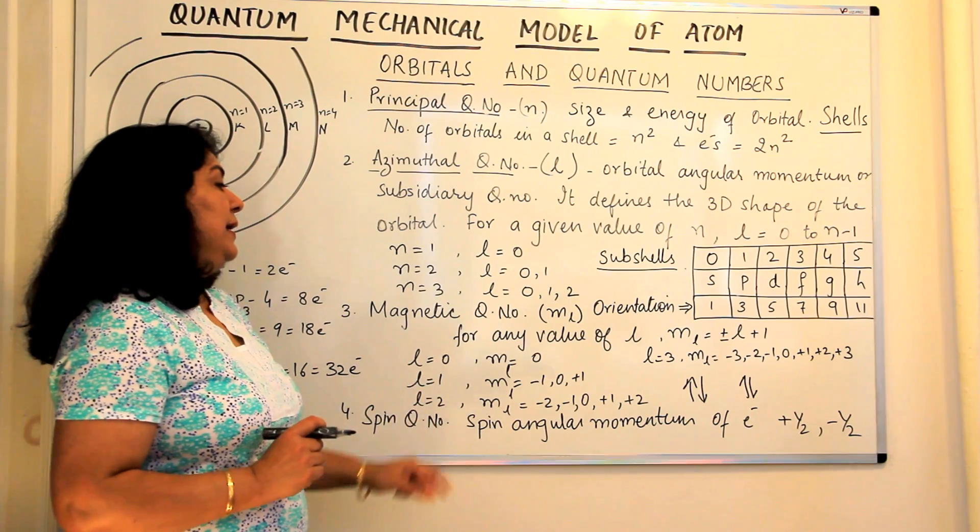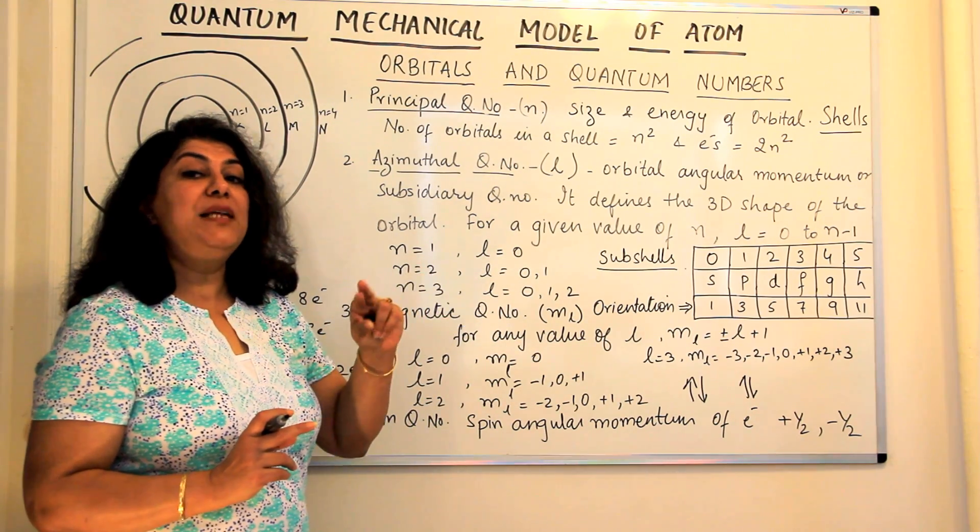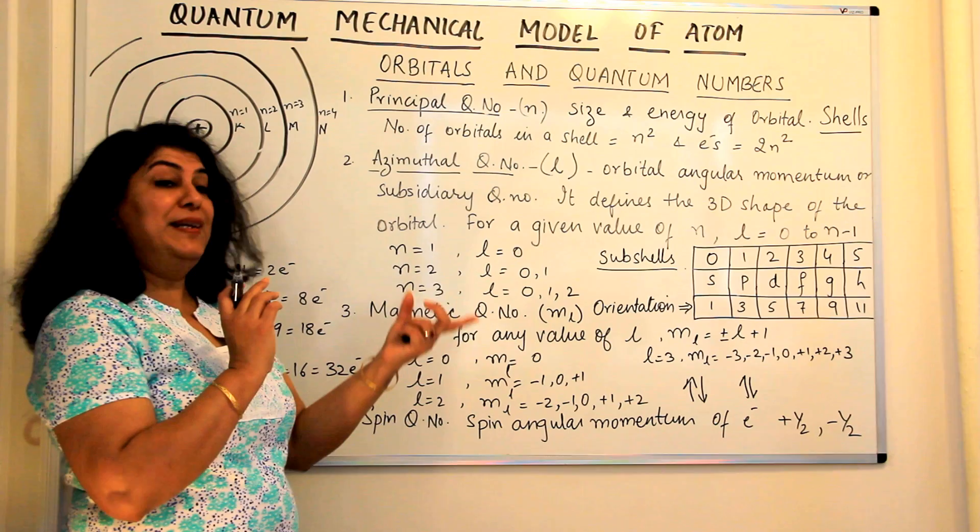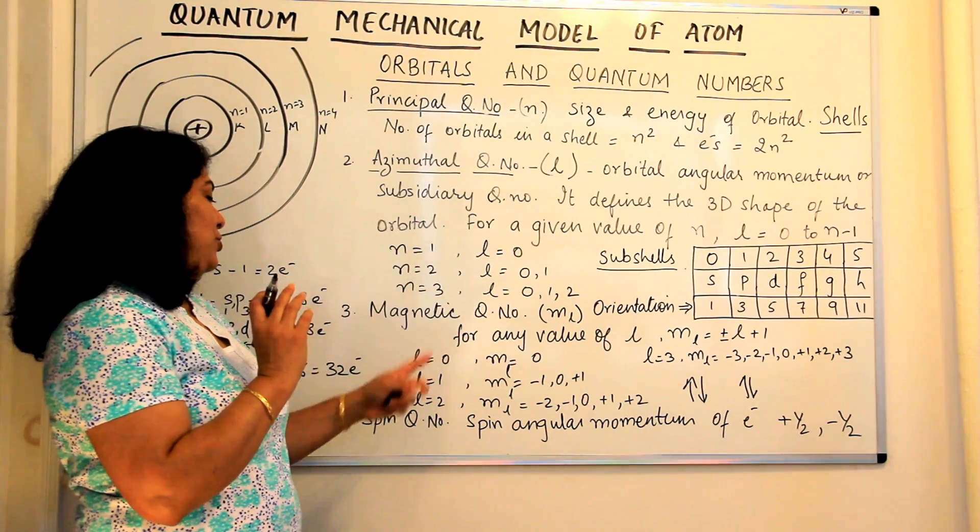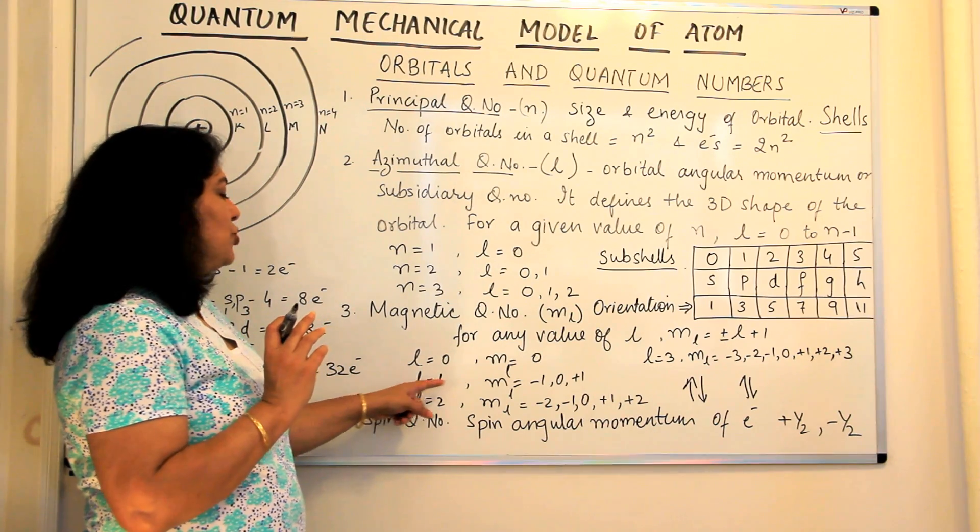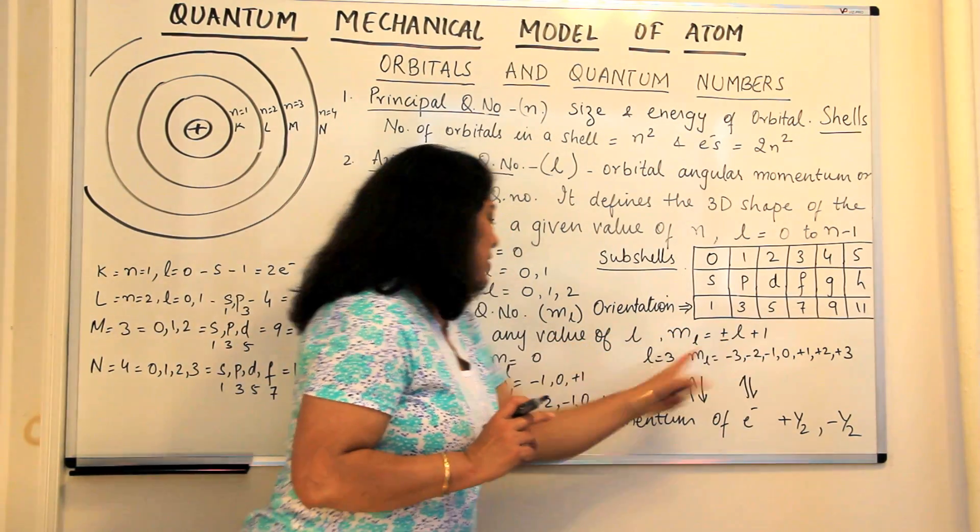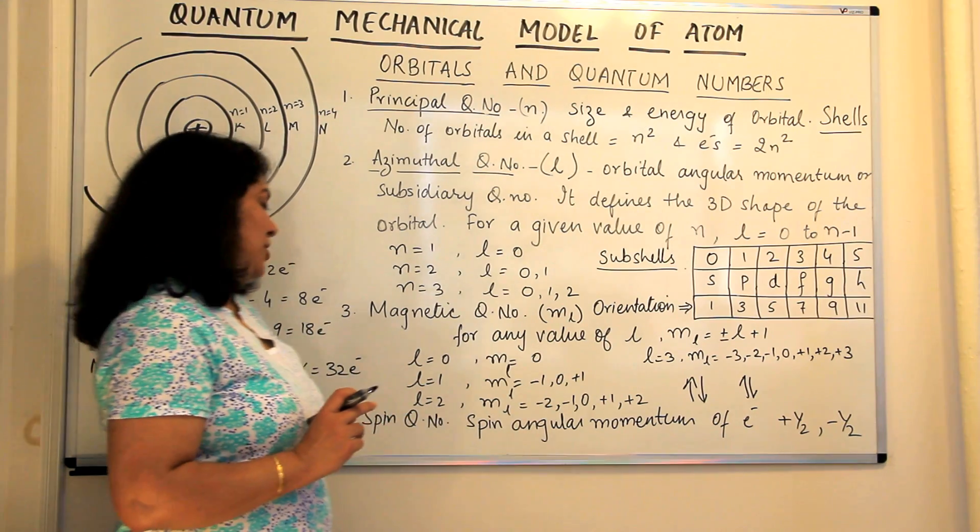If l is 1, then the value of ml would be from minus l to plus l, all the values including 0. So it would be minus 1 and this plus 1 value is 0. So it will be 0 and plus 1.